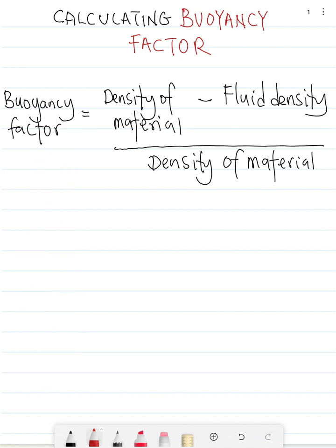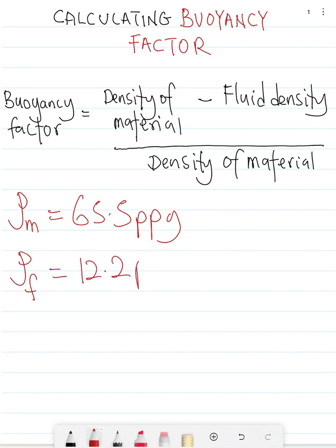Let's take a quick example so that we understand. Say we have the density of the material - steel - to be 65.5 pounds per gallon, and we have the fluid density to be 12.2 ppg. What will be the buoyancy factor?